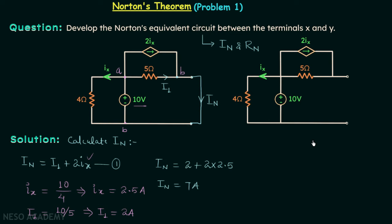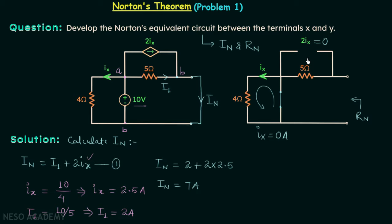Now we move on to calculating resistance Rn. To calculate Rn we need to turn off all independent sources. There is only one independent source — a voltage source — so we replace it with a short circuit. Applying KVL in the resulting loop, Ix equals 0 amperes, therefore 2 times Ix equals 0 and the dependent current source is open-circuited. Finally we can see that resistance Rn equals 5 ohms.